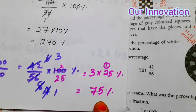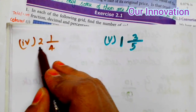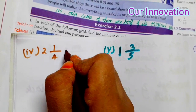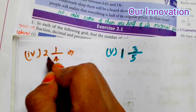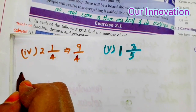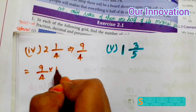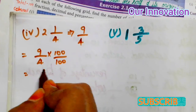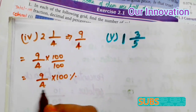So this is the answer: 75 percentage. Students, 4th one: 2 and 1 by 4 — this is a mixed fraction. Convert to improper fraction: 4 × 2 = 8, 8 + 1 = 9, so 9 by 4. Now we need the percentage: 9 by 4 into 100 by 100 is equal to 9 by 4 into 100 percentage.